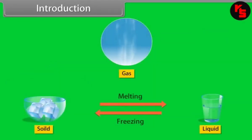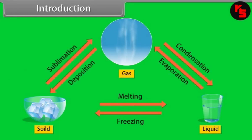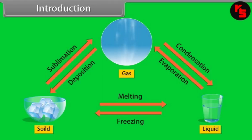Equilibria are solid and liquid, liquid and gas, solid and gas. In homogeneous equilibria, the reactants and the products are in the same phase, whereas in heterogeneous equilibria, the reactants and the products are in a different phase.